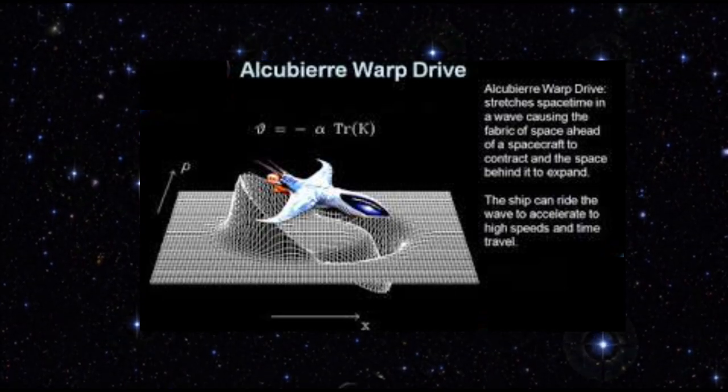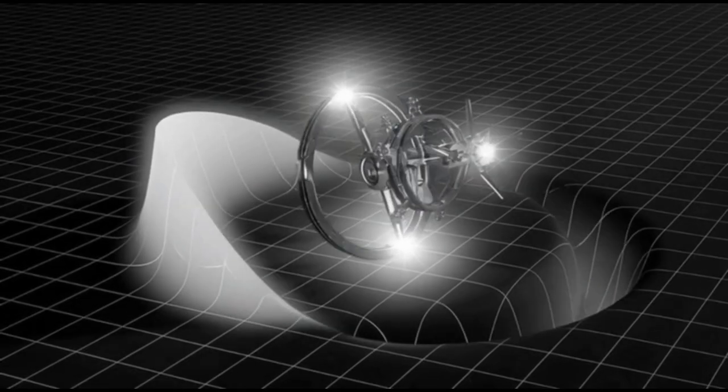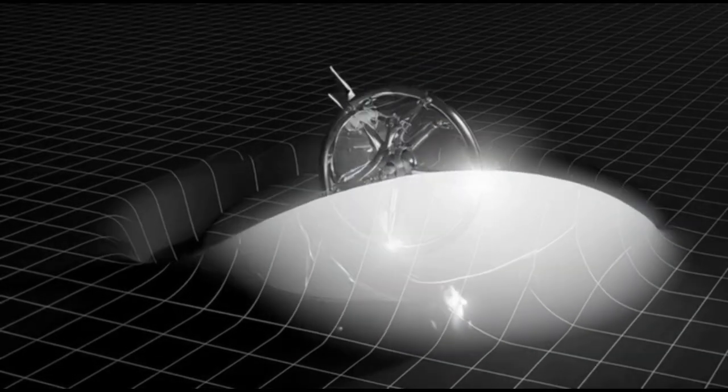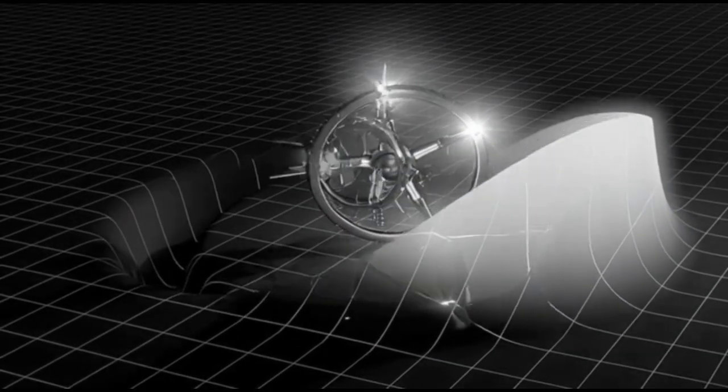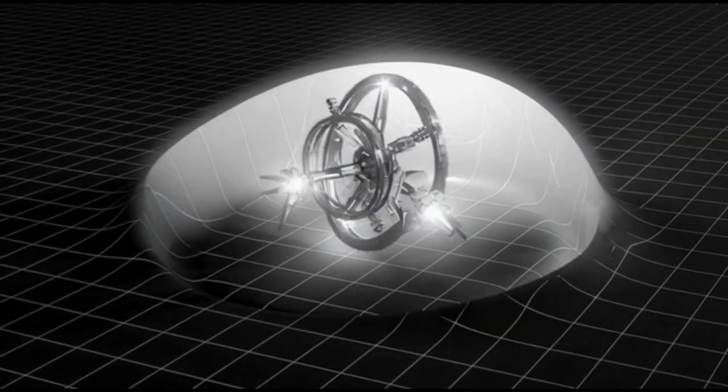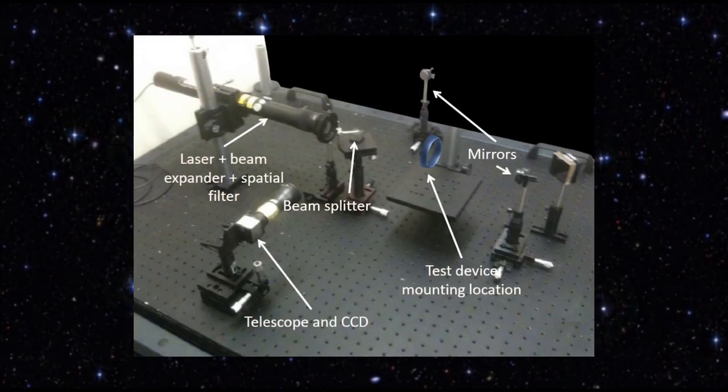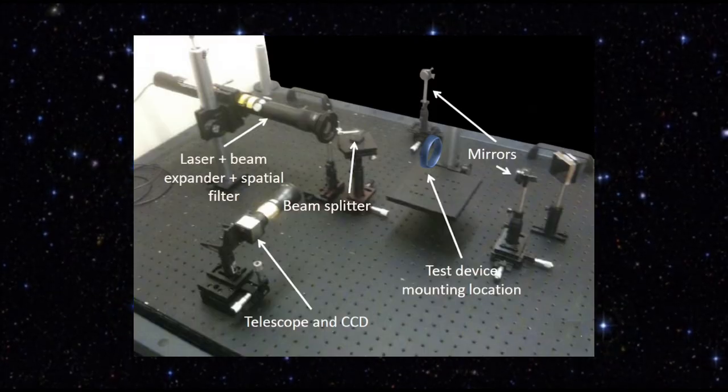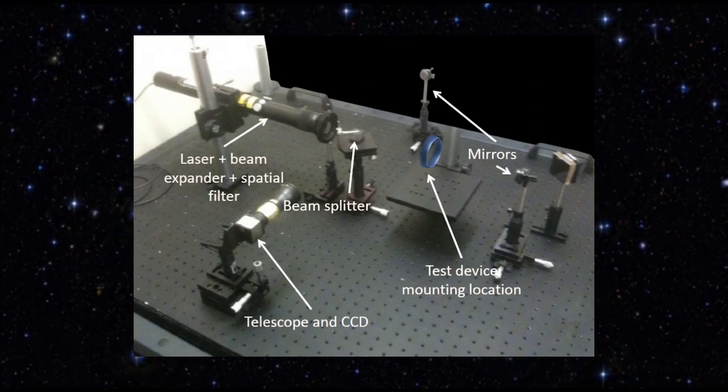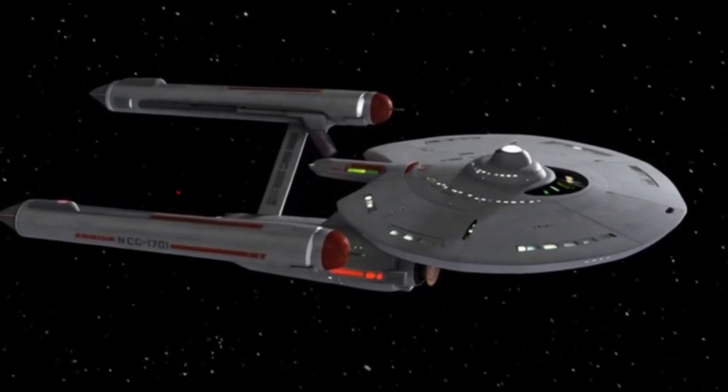In 2021, Alexey Bobrick and Gianni Martire introduced a new warp drive model that no longer requires negative energy. Their approach relies only on positive physical energy, though still at astronomical levels. This was a profound shift. Warp theory was no longer forbidden by physics, only limited by technology. The principle remains the same as a spacecraft inside a locally flat bubble with spacetime contracting ahead and expanding behind, but now the bubble can be sustained with known forms of energy.